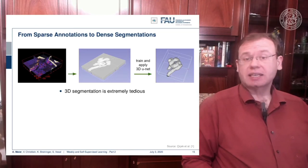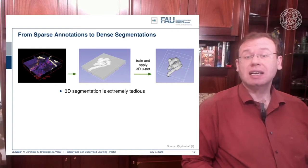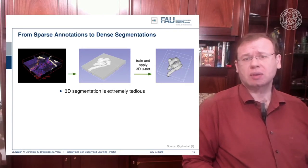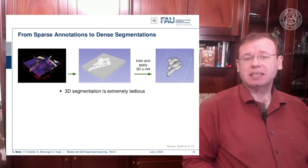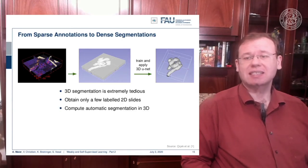As you might have guessed, annotating all of the slices subsequently — probably with different orientations in order to get rid of bias introduced by the slice orientation — is extremely tedious. So you don't want to do that. What we will look at in the next couple of minutes is how to use sparsely sampled slices to get a full automatic 3D segmentation.